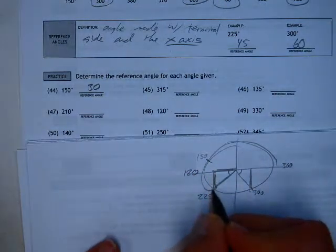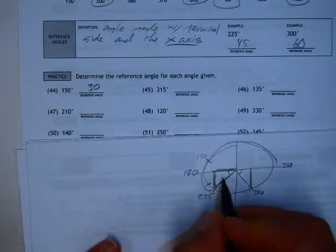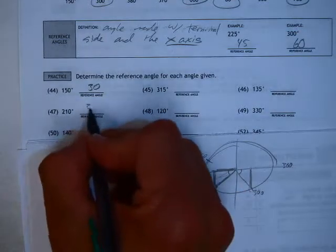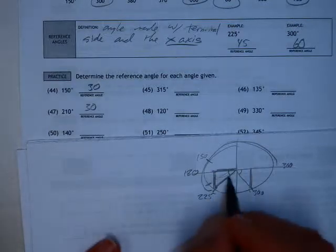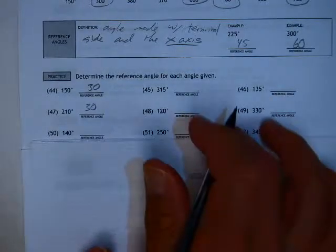210, down in this quadrant down here, same thing. The reference angle is 30 degrees. You don't have to worry about positives or negatives when you're talking about reference angles. You're simply saying how far away from the x-axis is it.